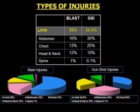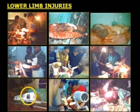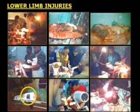In both the blast and gunshot injury groups, the majority were limb injuries, which were more common among blast injury victims. These are different types of blast injuries in the lower limbs — you can see the devastating nature of the injuries and how our medics are attending to those. This is an unexploded 60-millimeter mortar bomb stuck in the soldier's thigh; our medical officer was able to remove it without getting blasted himself.